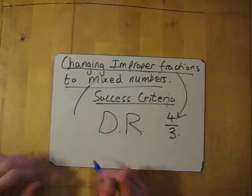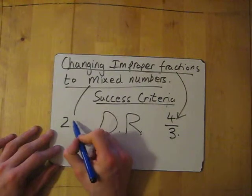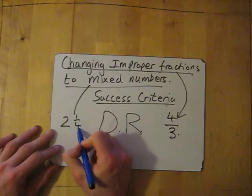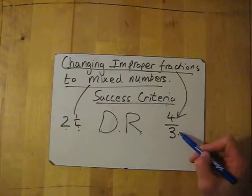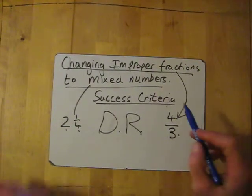is a mixture between whole numbers and fractions, something like two wholes and a quarter. It's a mixture between the wholes and the fraction. If we want to change from an improper fraction to a mixed fraction, this is what we need to do.